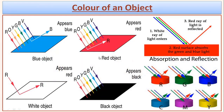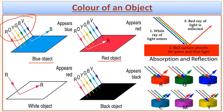Let's understand the concept of color with this example. Here you can see different objects with different colors — a blue object and a red object. The object appears blue or red in color because when the body is placed under white light, only a specific color gets bounced back. The specific color which bounces back and reaches your eye makes you perceive the object in that particular color.